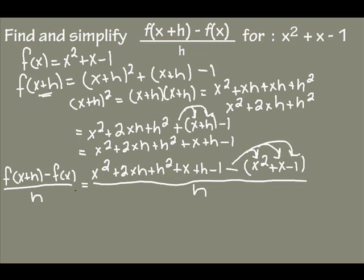So what I'll end up with - I think I'll start way over here again - is x squared plus 2xh plus h squared plus x plus h minus 1 minus x squared minus x plus 1, all divided by h.